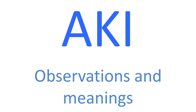Clinically, AKI is characterized by a rapid reduction in kidney function — reduced renal function. When I was young, we used to call it acute renal failure. The kidney is responsible for maintaining many of the homeostatic parameters within the body, and if the kidney is not functioning normally, it can't function in this normal physiological way.